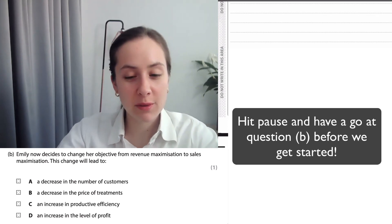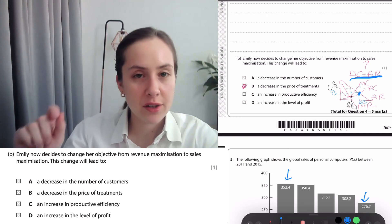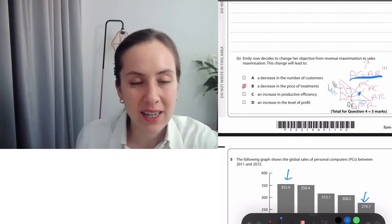If Emily changes to sales maximization, I've drawn a graph. She will go from the black PR and QR to the blue PS and QS. You can see that the price will fall. The price falls because her target is now producing where AC equals AR.